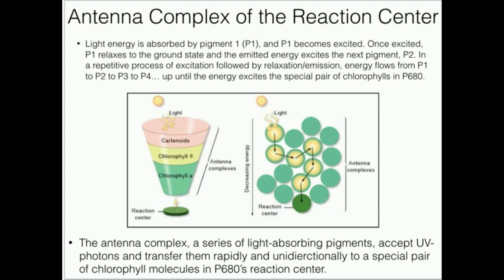Light energy is absorbed by pigment one and pigment one becomes excited. Once excited, pigment one relaxes to the ground state and the emitted energy excites the next pigment, P2. In a repetitive process of excitation followed by relaxation, energy flows from P1 to P2 to P3 to P4 and up until the energy excites the special pair of chlorophylls in P680. The special pair of chlorophylls are part of the P680 reaction center and they can actually donate electrons.